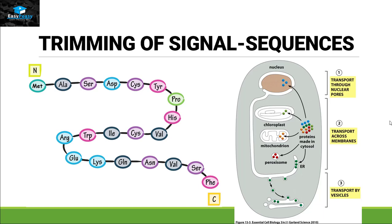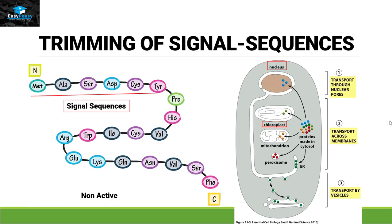The second type of modification is trimming of the signal sequence. When a protein comes out of translation it is non-active. The first 15 to 30 amino acids present on the N-terminal of that protein are called the signal sequence. This signal sequence recognizes whether the protein is going to function inside the nucleus, the chloroplast, the mitochondria, peroxisomes, or go out of the cell in the form of vesicles. Once that destination is decided, the signal sequence needs to be terminated in order to make the protein active.